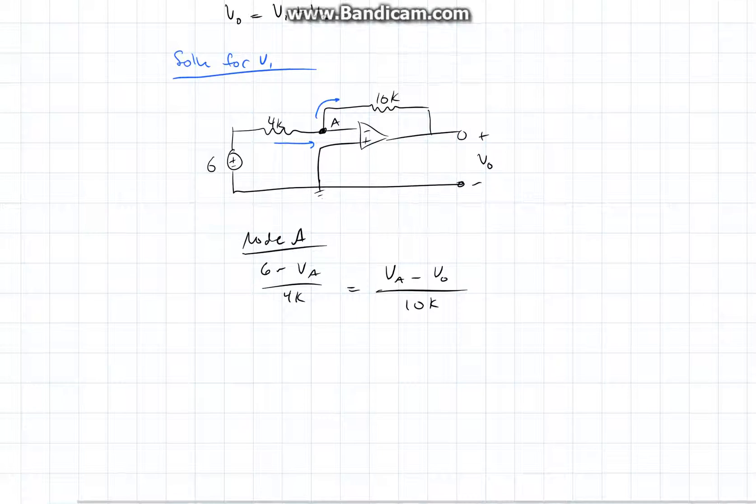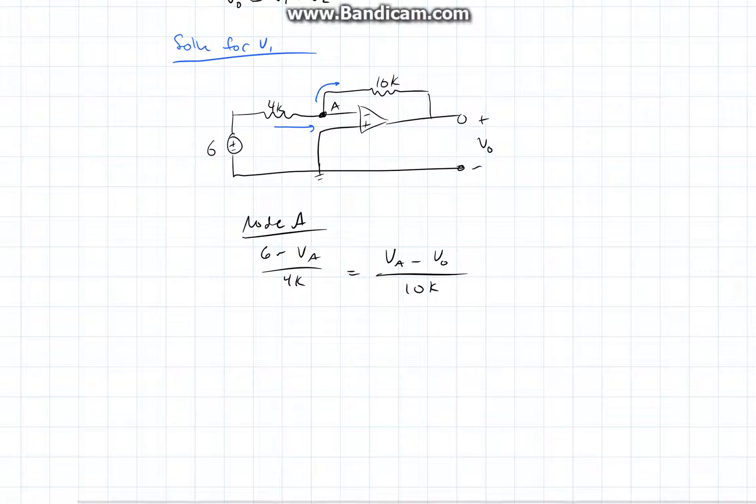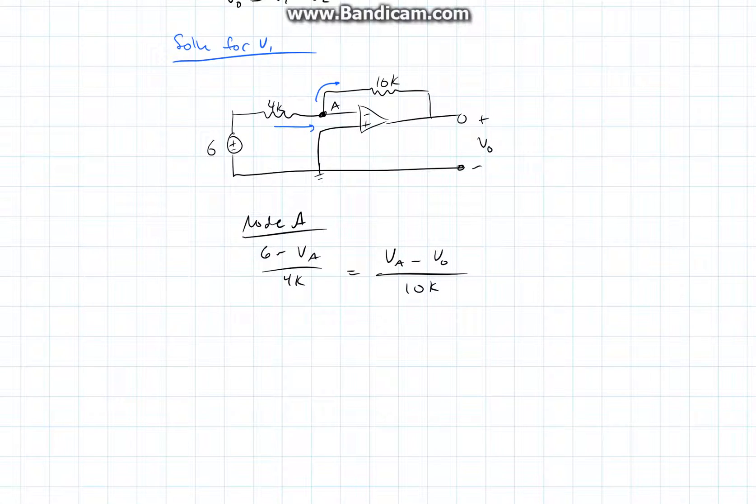Now, also, we know that the voltage at A must be equal to the voltage at node B. With the 4-volt power source removed, this wire is connected directly to ground. Therefore, the voltage at A is equal to the voltage at B, which is equal to 0 volts.